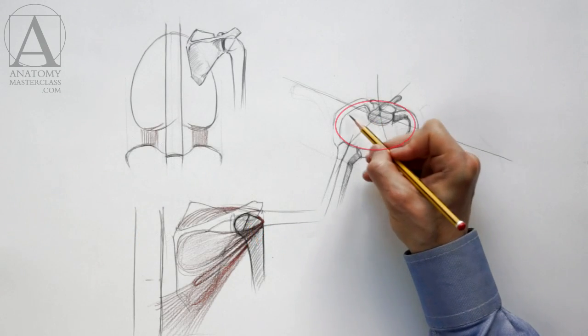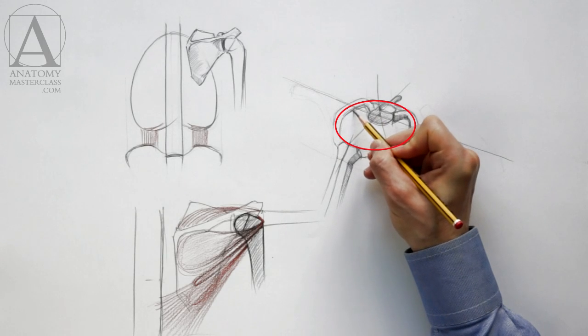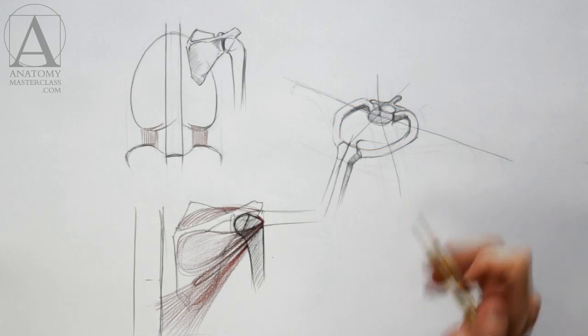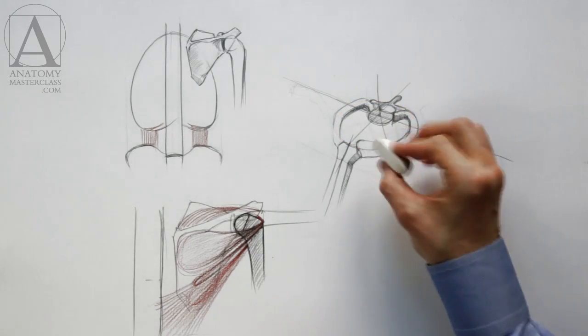The first pair of ribs forms an almost circular shape. The width of this circle defines the size of the neck at its base. Many neck muscles attach to that pair of ribs.